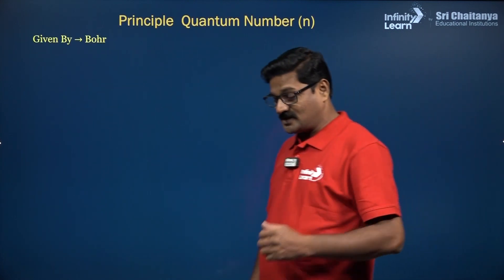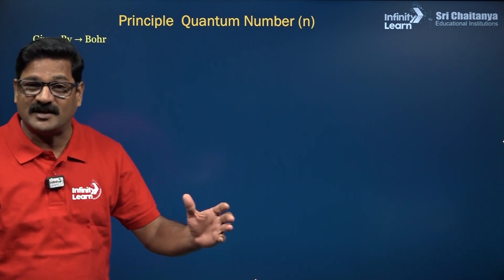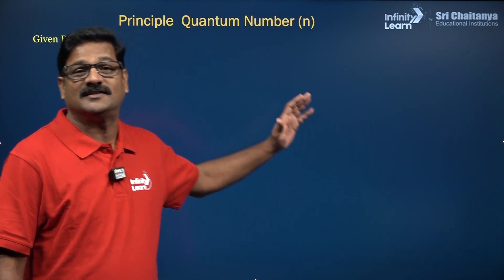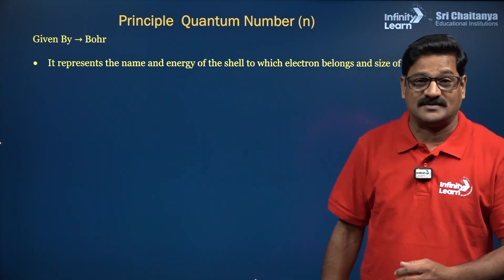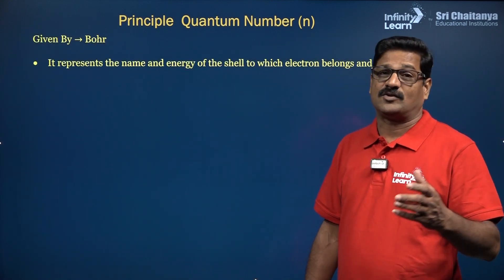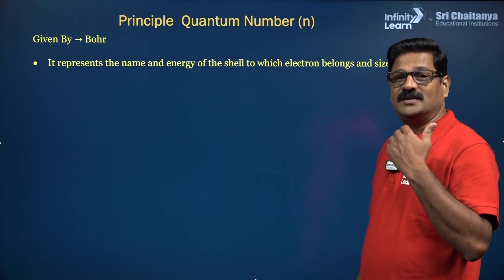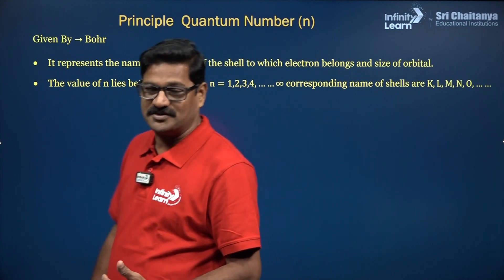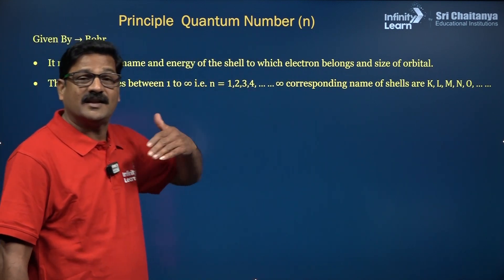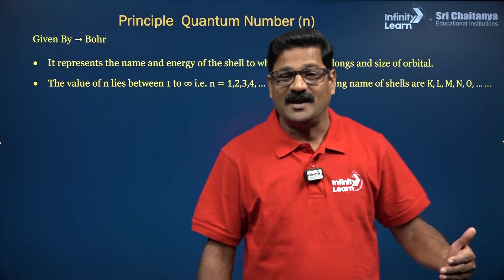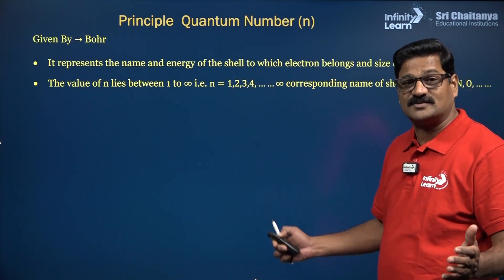The principal quantum number is given by Niels Bohr. Whatever we study about Niels Bohr theory is essentially the principal quantum number. It signifies to which shell an electron belongs. The shell can be K shell, L shell, M shell, and N shell, and its values are N = 1, 2, 3, up to infinite numbers.